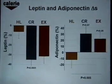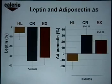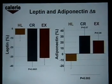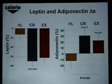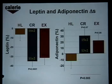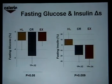What happened to leptin and adiponectin? As expected, leptin dropped equally in both CR and exercise — almost more than 30% drop — and adiponectin went up. So of course they became more insulin sensitive. In fact, glucose dropped in both CR and exercise, and insulin also.